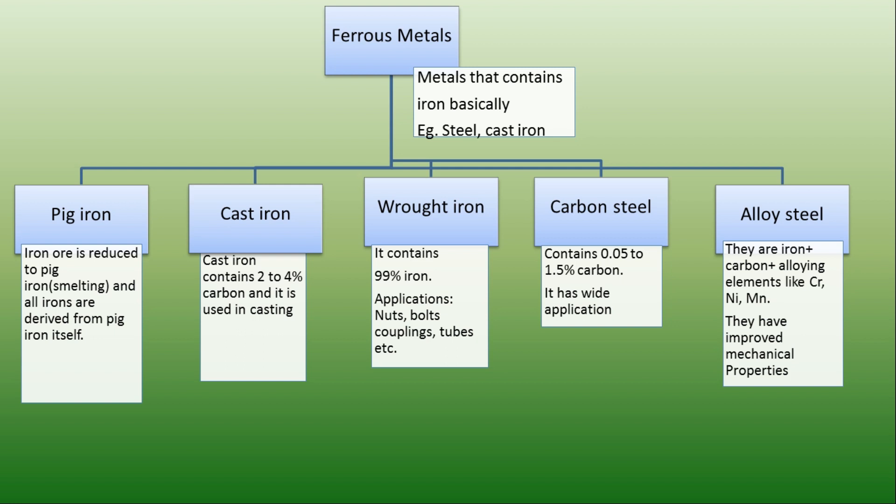Low carbon steels are also called mild steels. They have a variety of applications — they are used in automobiles, civil structures, and forging. Medium carbon steels are used in manufacturing of connecting rods, shafts, and rails.